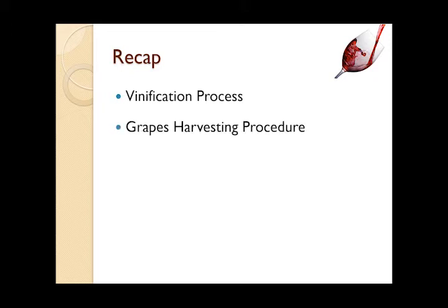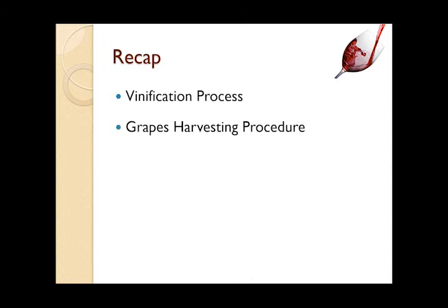We covered the initial stages of the Vinification process, starting with the grape harvesting procedure — how the grapes are harvested manually and mechanically. Next, we covered the crushing process for different grapes and different wines: how the grapes are crushed for red wine manufacturing, and how the grapes are pressed for white wine manufacturing.